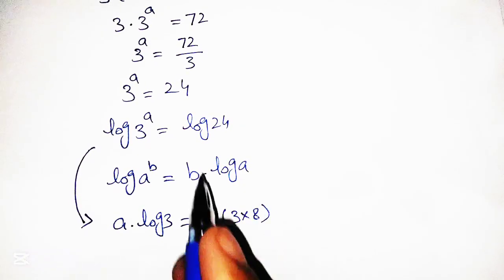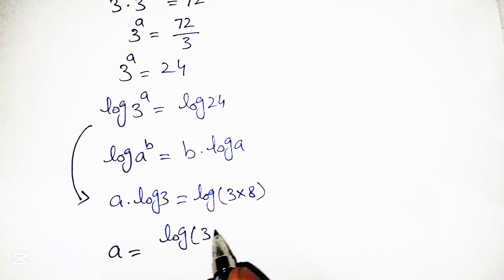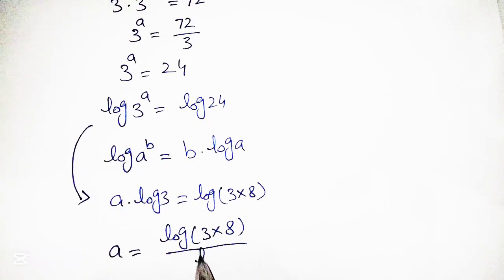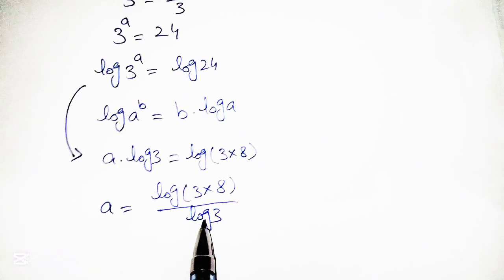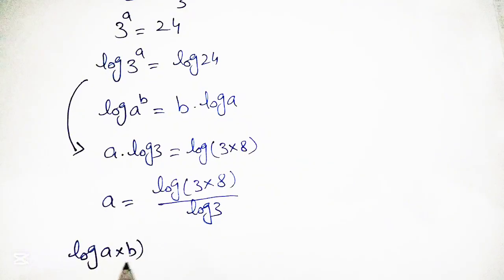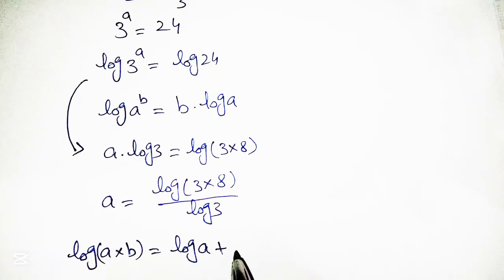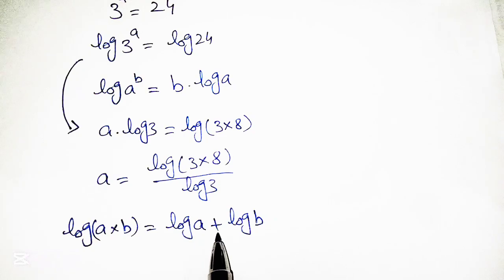The right-hand side, 24, can be written as 3 into 8. So we get a is equal to log of 3 into 8 over log of 3. We now apply the logarithmic product formula: log of a times b equals log of a plus log of b, meaning two numbers multiplying under a common logarithm can be written as separate logarithms with summation.